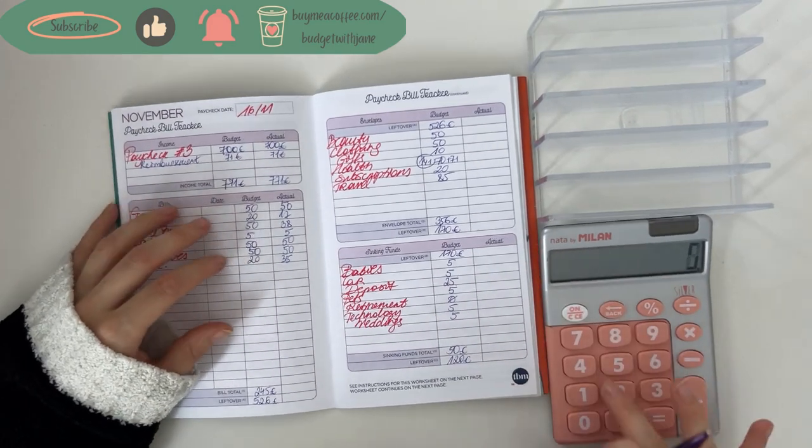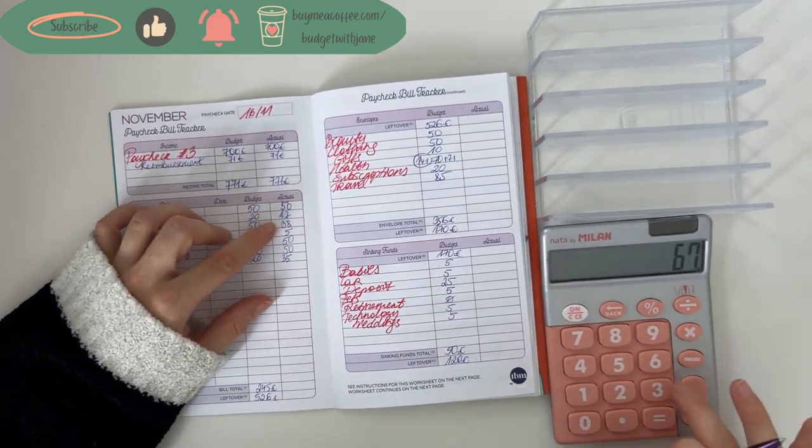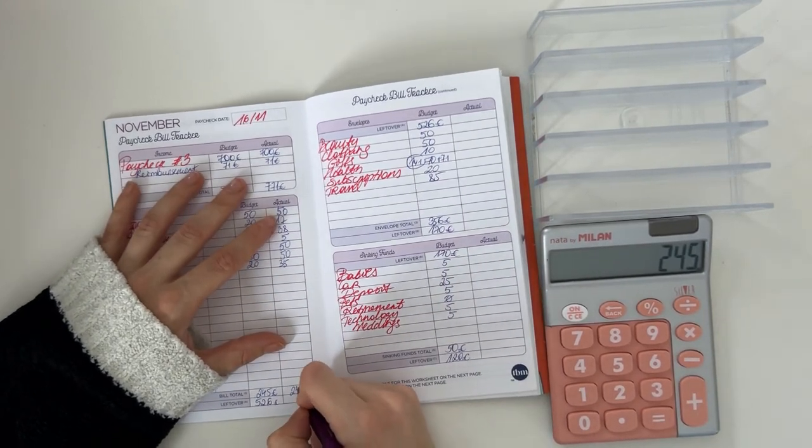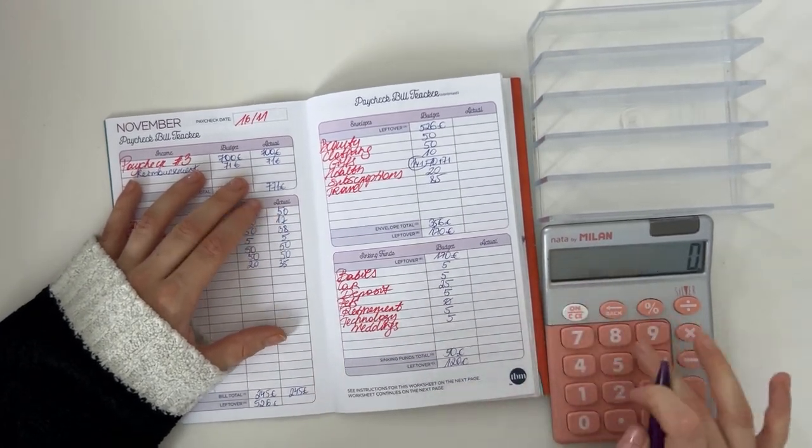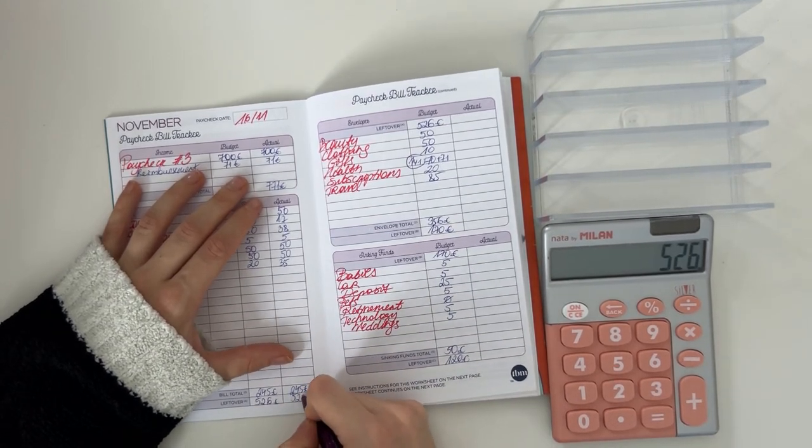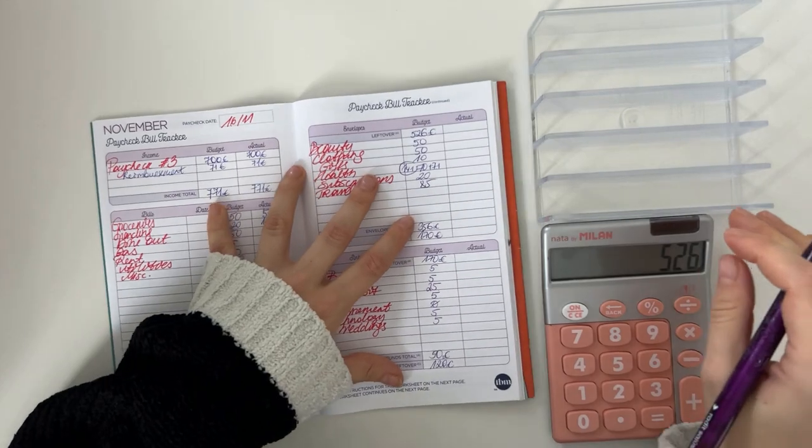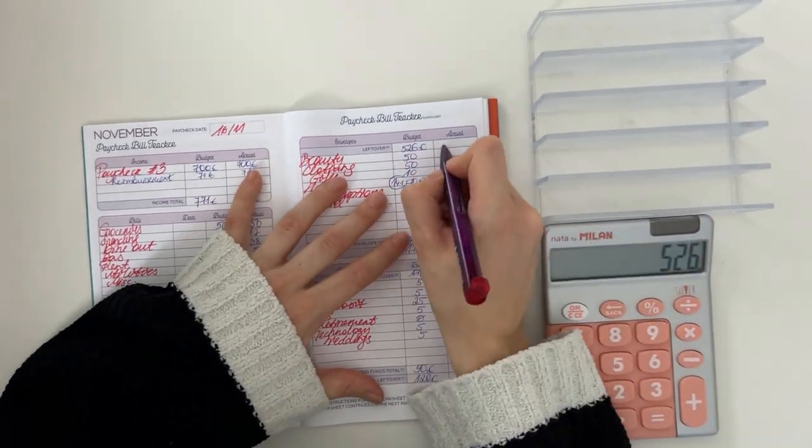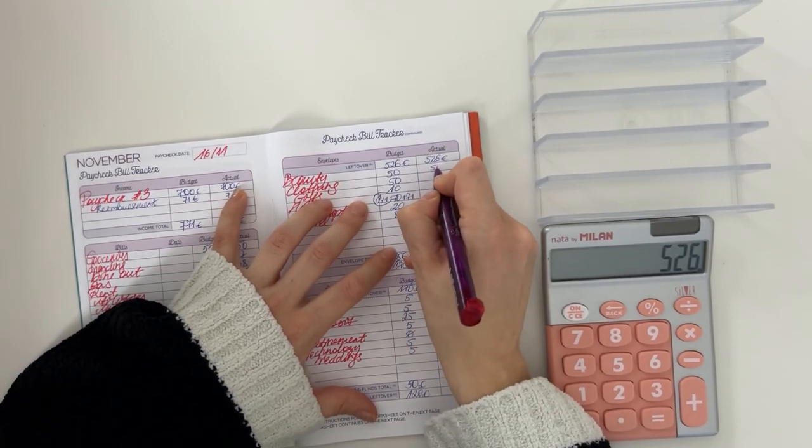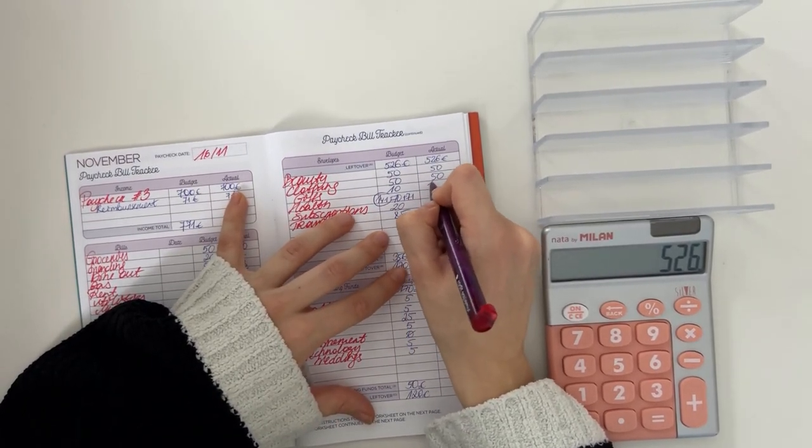So in total for bills and cash envelopes for this week, it was 245 euros. So 771 minus 245 is 526. So 526 we're bringing here to short-term sinking funds. Beauty got 50, clothing got 50, gifts got 10, health got 141, subscriptions got 20, and travel got 85. So in total that was 356.